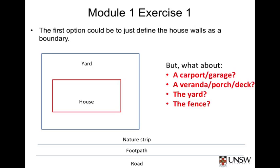Let's assume they own the whole house. As a system boundary, though, the house walls are probably a bit limiting because the boundary doesn't take into account any carport or garage, or any veranda, porch, or deck that might be attached to the house. Using the walls as a boundary is also limiting because it doesn't recognise that the owners also own the yard and the fence, both of which they'd probably want to include as part of their system of interest.